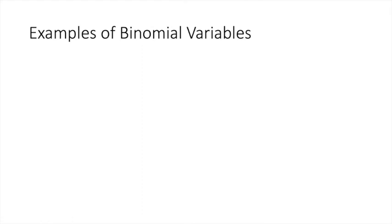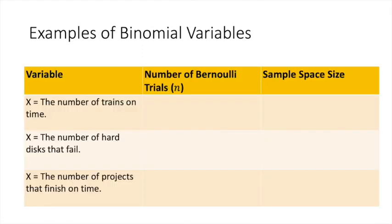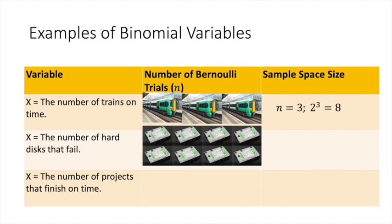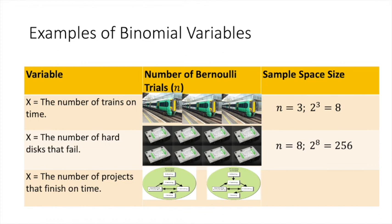Here are some examples of binomial variables. Suppose we want to measure how many trains arrive on time. We try out three trains, or we can try the same train three times. So the number of Bernoulli trials n equals three, and hence the sample space size equals eight. Similarly, if we have a cluster of computers with eight hard disks and want to know how often they fail, then n equals eight, and hence the sample space size equals 256. Likewise, if we are monitoring two projects and want to count how many will finish on time, then n equals two, and hence the sample space size equals four.